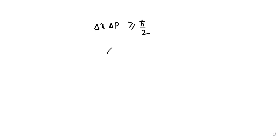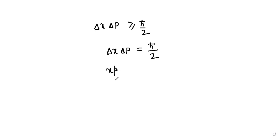Taking the maximum uncertainties and the minimum value ΔxΔp = ℏ/2, with Δx taken as x and Δp taken as p, we can write x·p = ℏ/2. From here, we get p = ℏ/(2x).